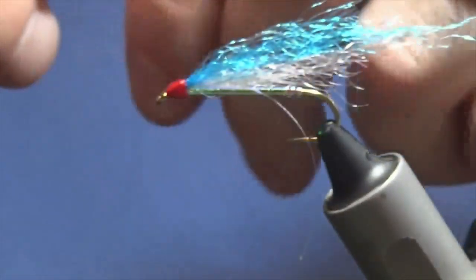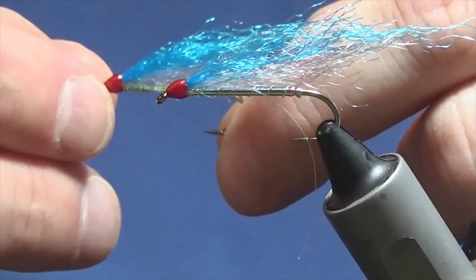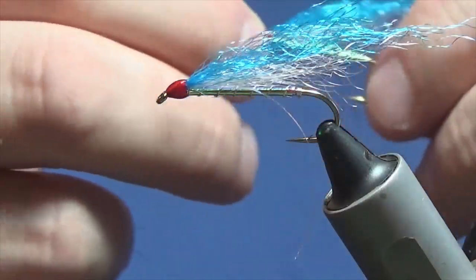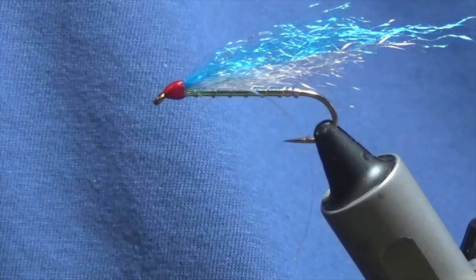So that's one there that has been varnished. Good wee fly to have in your box. So guys, get a few tied up if you fish for the sea trout and hopefully they can catch you a few fish.